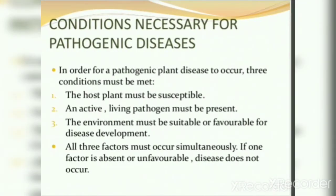Now, the conditions necessary for a pathogen to cause disease. In order for a pathogenic plant disease to occur, three conditions must be met: first, the host plant must be susceptible; second, an active living pathogen must be present; and third, the environment must be suitable or favorable for disease development — like high humidity, moisture, or rainy season. All three factors must occur simultaneously. If one is absent or unfavorable, disease does not occur. If the host is resistant, pathogen attack will not succeed — that is why we develop resistant varieties.